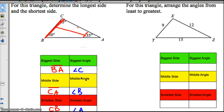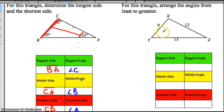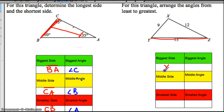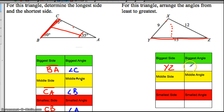Now let's look at the opposite way around. If I know the sides, how can I determine the angles? The biggest side here is YZ — YZ is our biggest side at 15. The angle opposite that would be X. So if I start here and go across, I hit angle X. So angle X is our biggest angle.